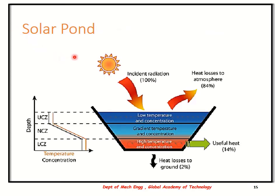The next is the solar pond. A solar pond utilizes the difference in temperature between the top layer and the bottom of the ocean to generate electricity. Although it is not the most efficient system, it is also a form of energy extraction using solar energy.